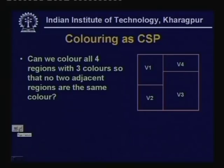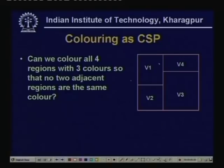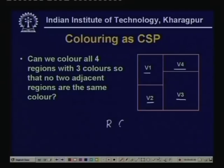Let us look at the graph coloring or map coloring problem. We have a map with four regions V1, V2, V3, and V4, and three colors: red, green, and blue. We want to know if we can assign colors to regions such that two adjacent regions do not have the same color. This is the map coloring problem — for example, coloring countries on a map so that adjacent countries always have different colors.